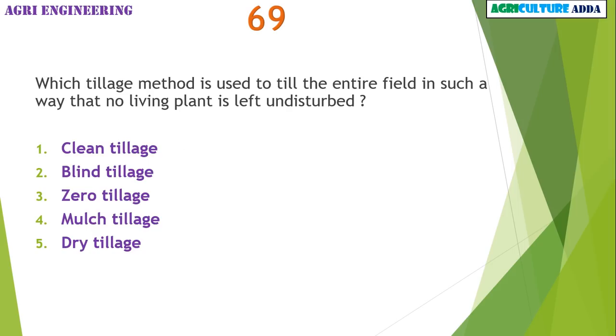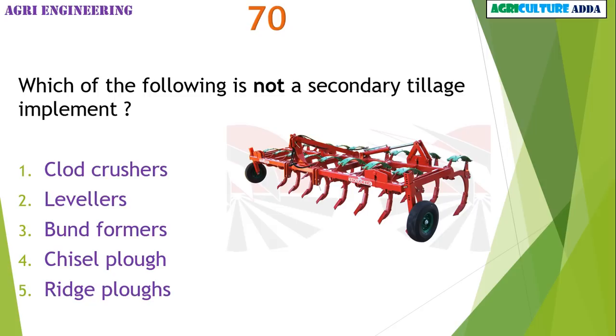Which tillage method is used to till the entire field such that no living plant is left undisturbed? Clean tillage. Which of the following is not a secondary tillage implement? Chisel plough.